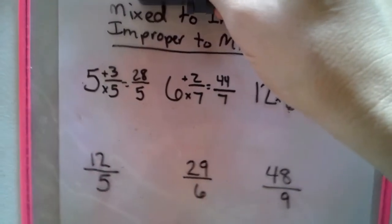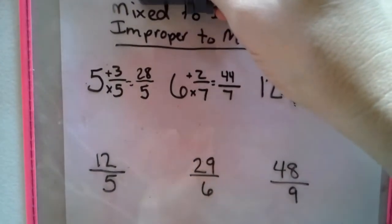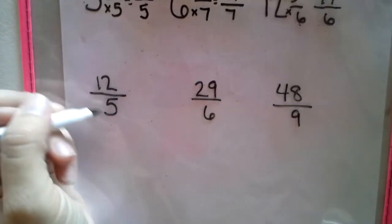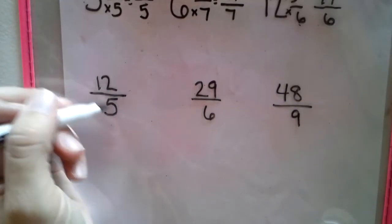Now let's do the complete opposite of that. We're going to take an improper fraction and make it into a mixed number.